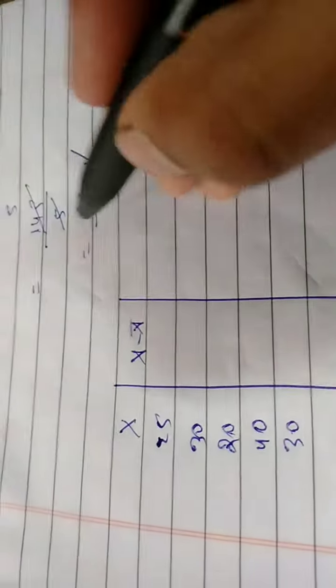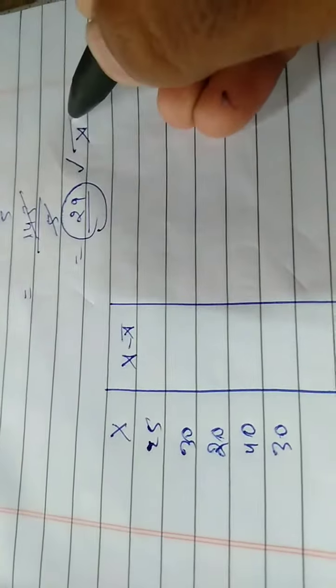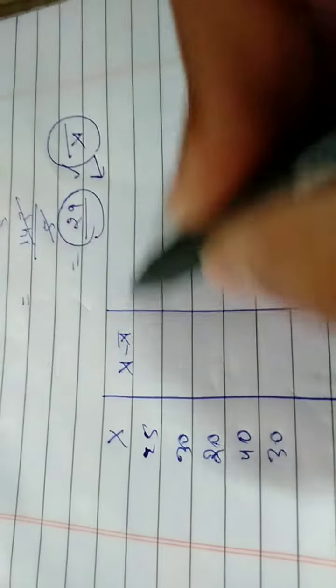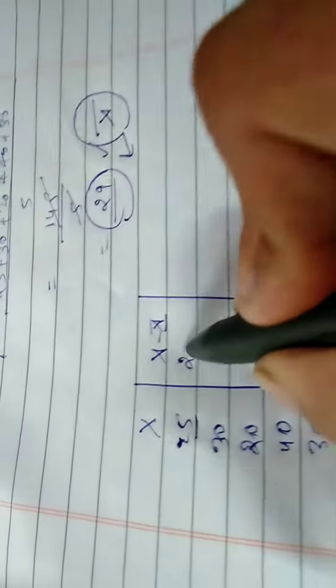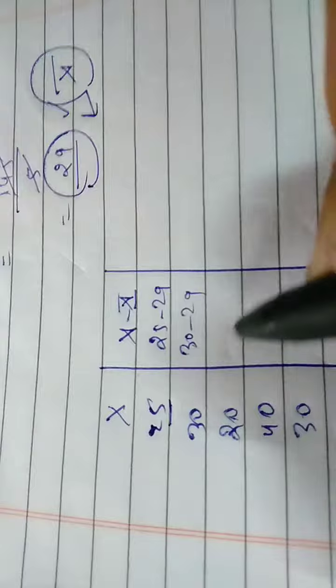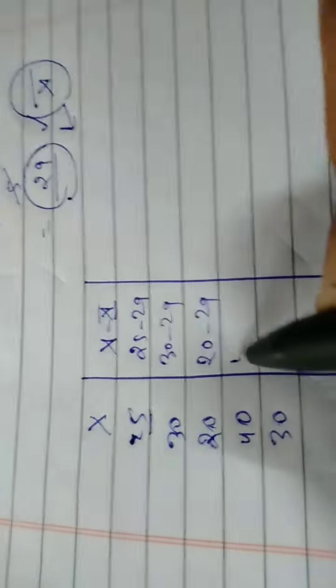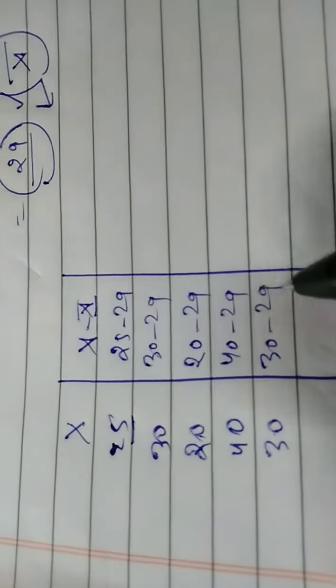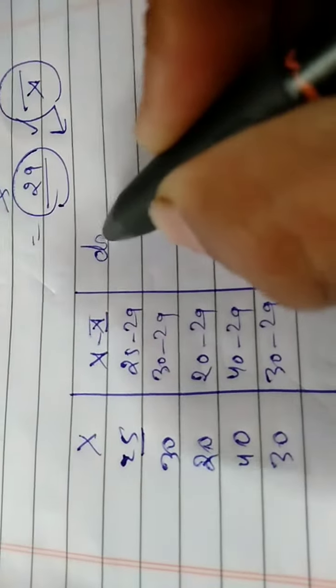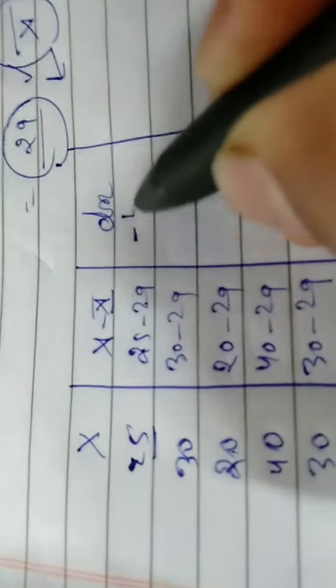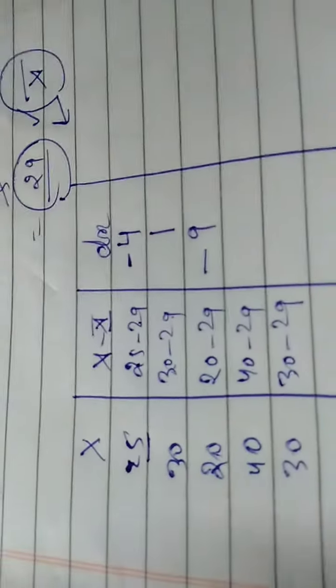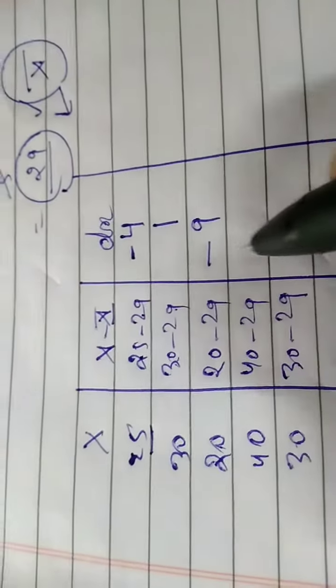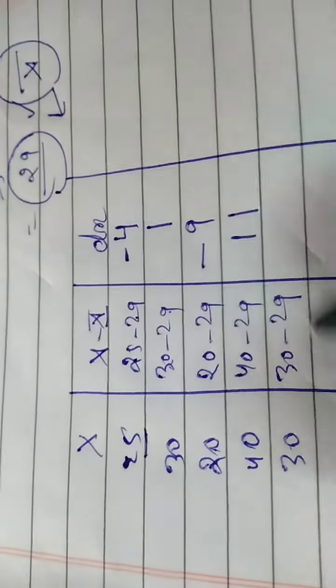Just write x minus x̄. Minus it. 25 minus 29, 30 minus 29, 20 minus 29, do you understand me, 40 minus 29 equals 11, 30 minus 29.